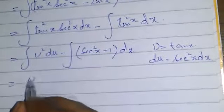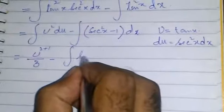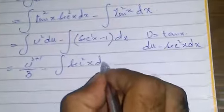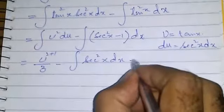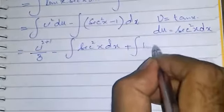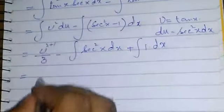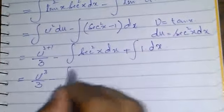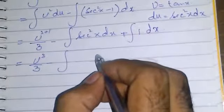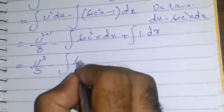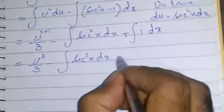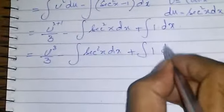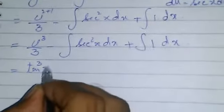This part becomes u to the power 3 over 3 minus integral secant squared x dx plus integral 1 into dx. This is equal to u to the power 3 over 3 minus tan x plus x.